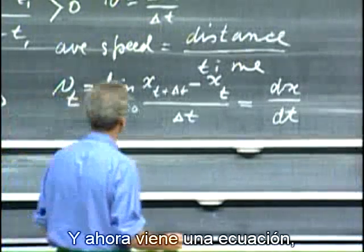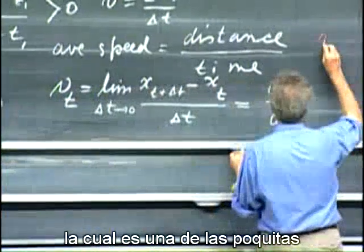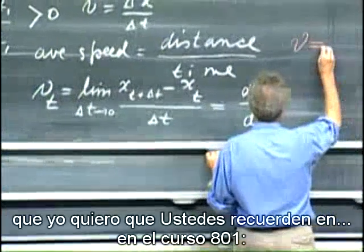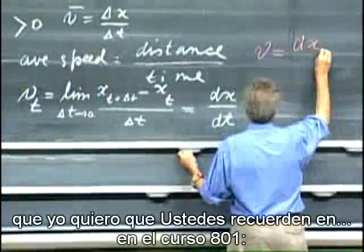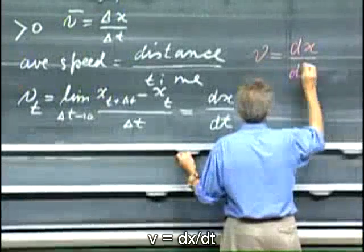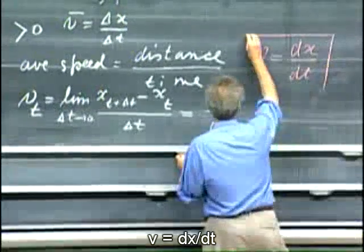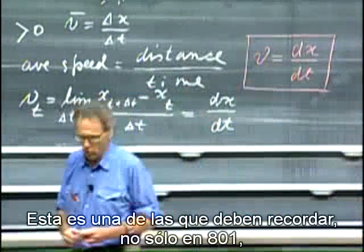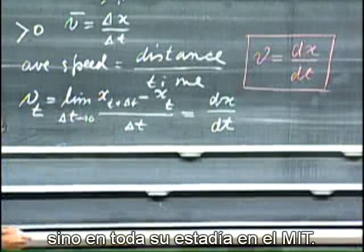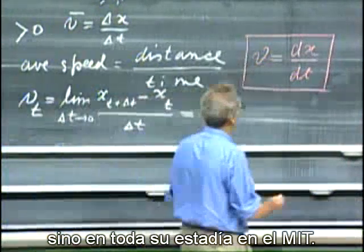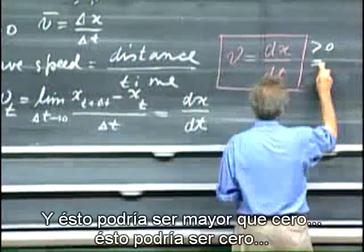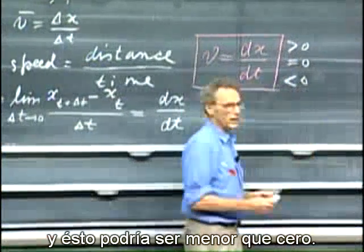And now comes an equation, which is one of the very few that I want you to remember. Remember, in 801, v equals dx dt. This is one that you must remember not only in 801, but for the rest of your time at MIT. And this could be larger than zero, this could be zero, and this could be smaller than zero.